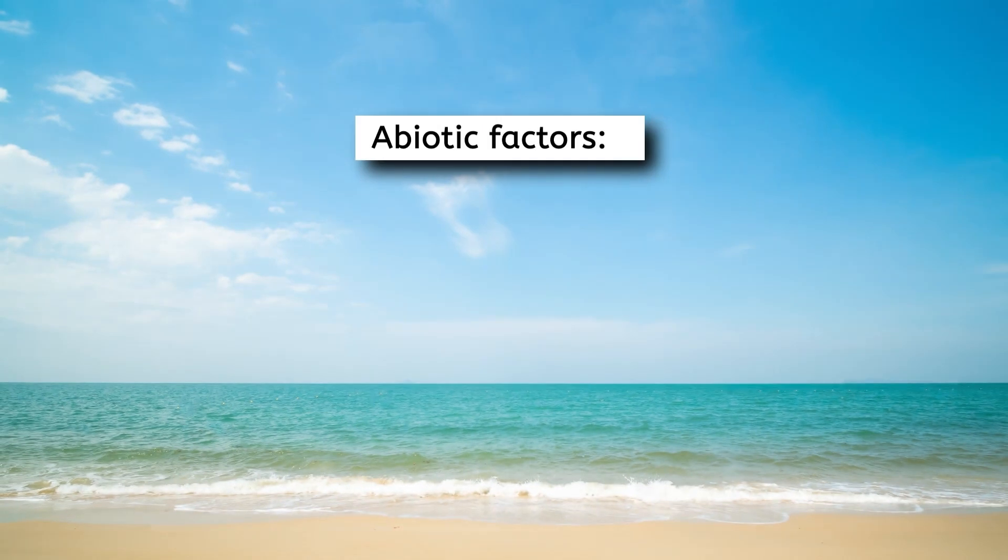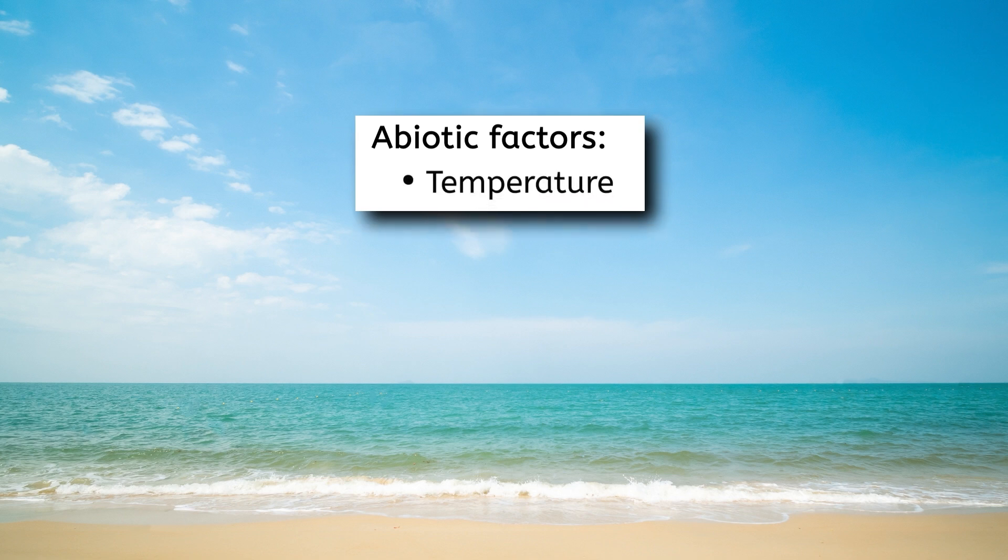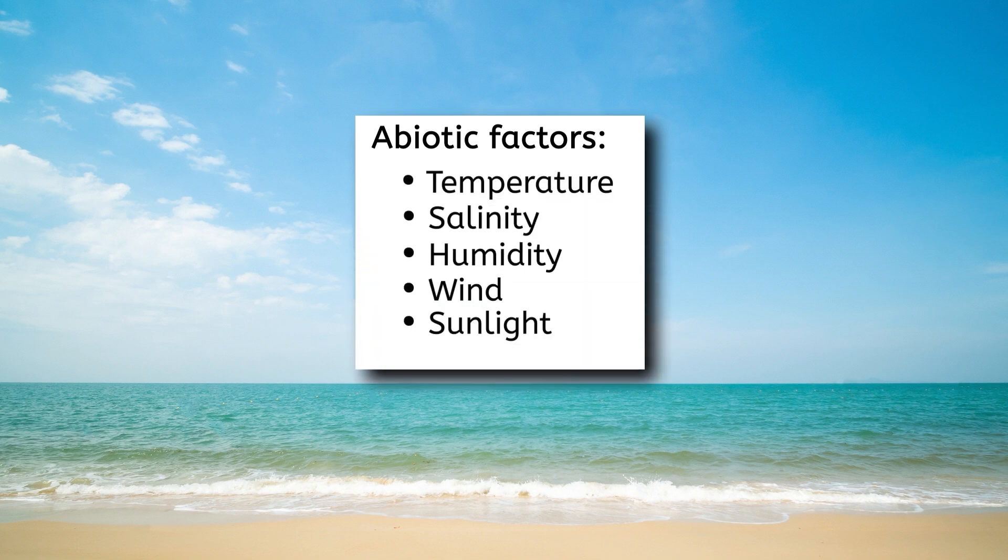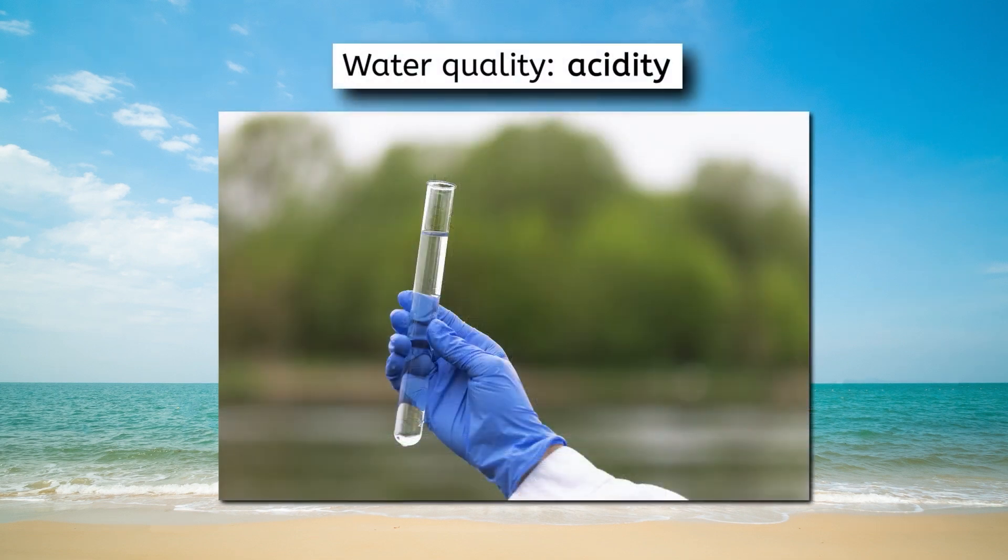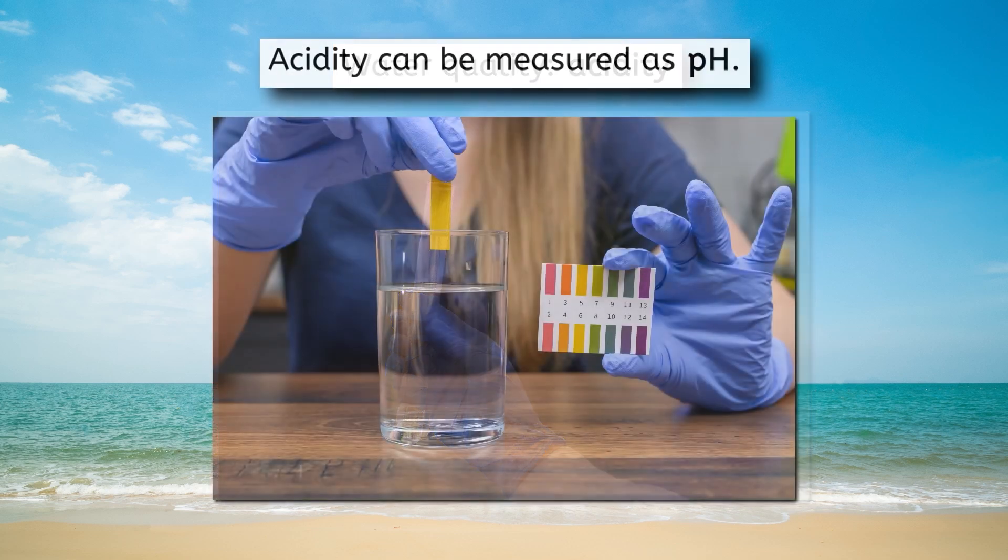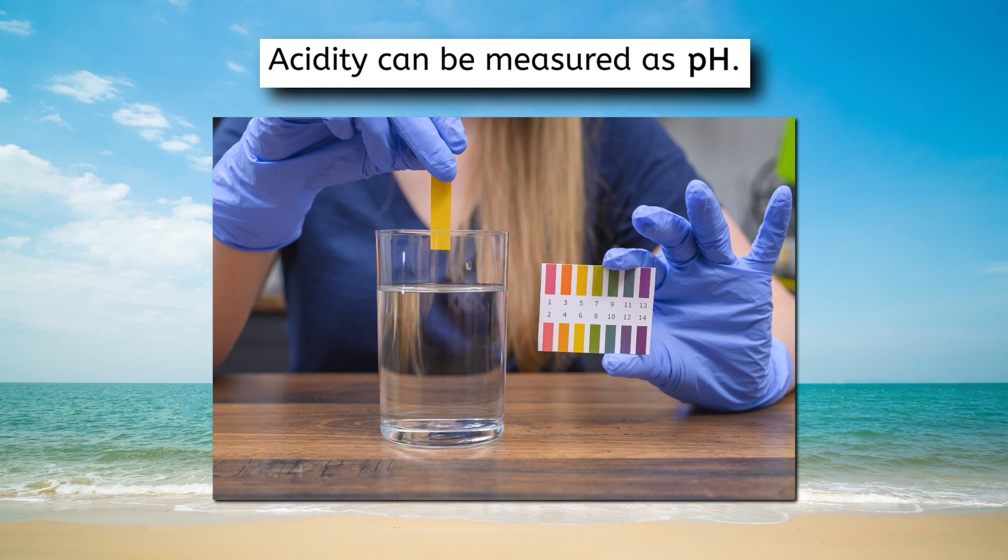To get started, we need to pick an abiotic factor to test. Some ideas include temperature, salinity, humidity, wind, sunlight, water quality, and soil quality. For my experiment, I decided to consider water quality, and specifically I tested the effect of the water's acidity. We can quantify the acidity of water by measuring a property known as pH. It's important that the factor you test is quantifiable or able to be measured numerically.